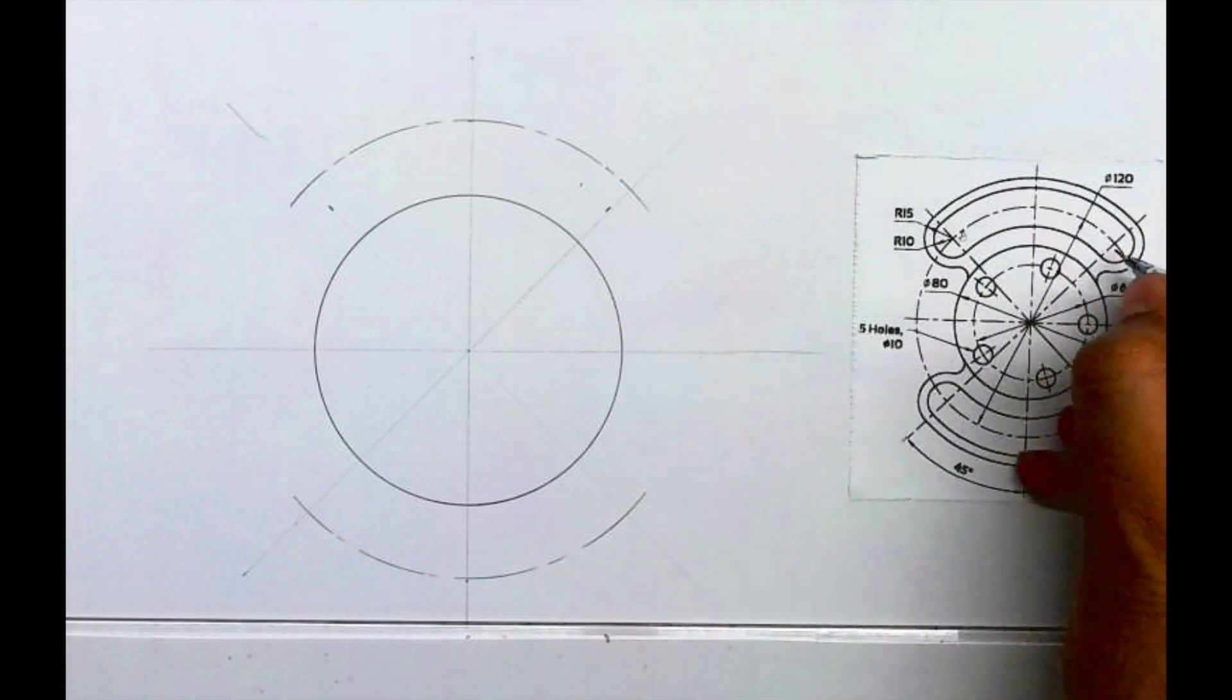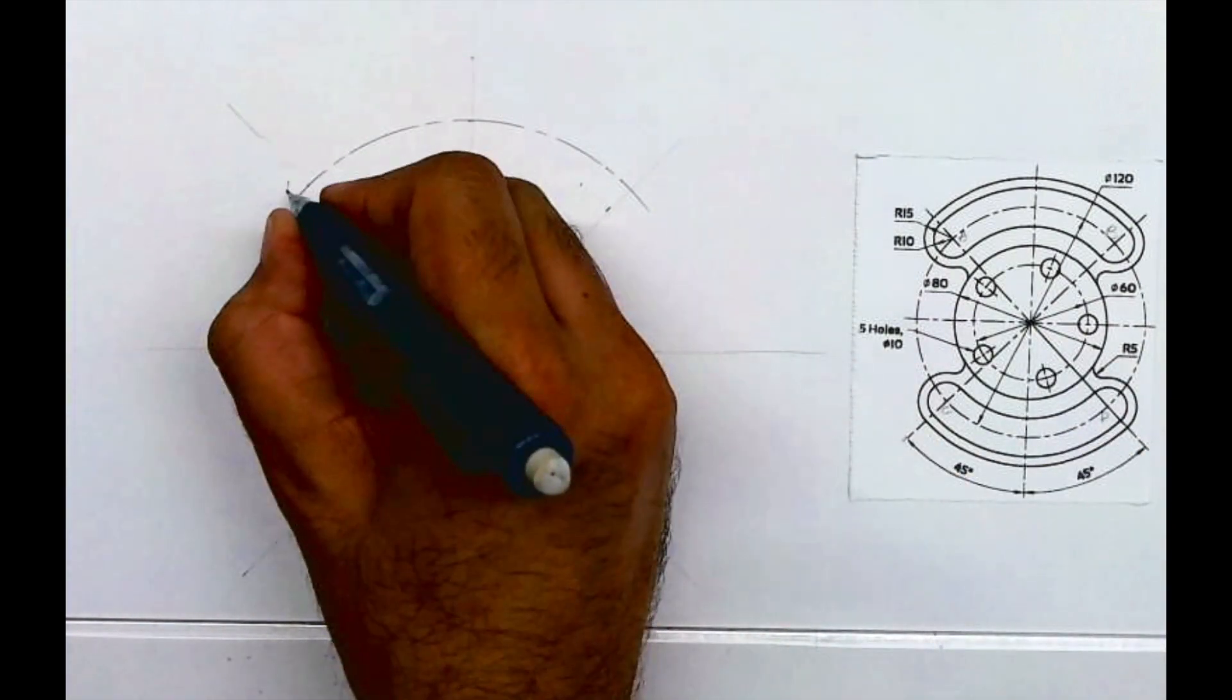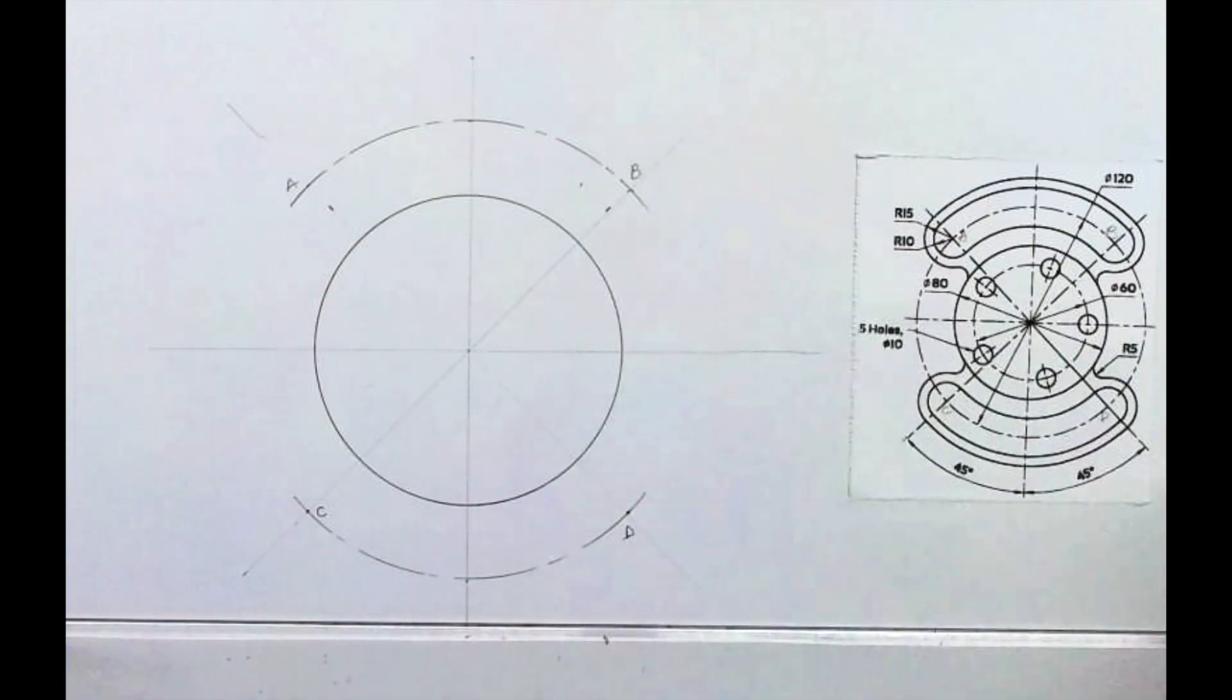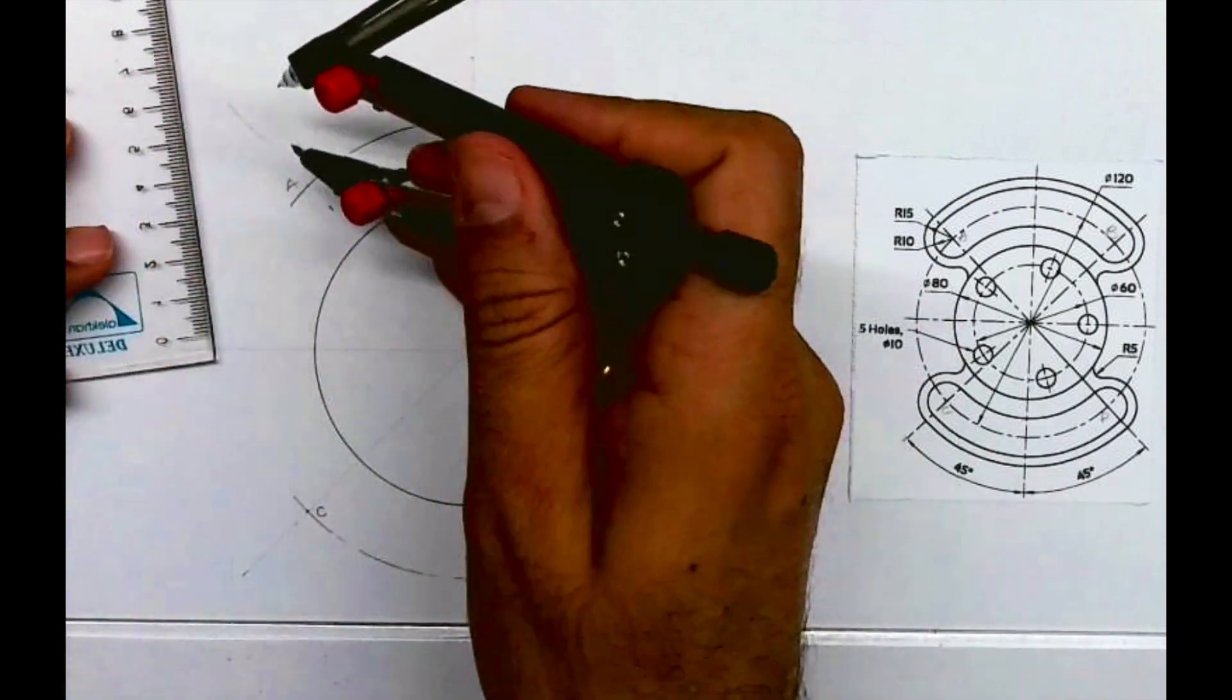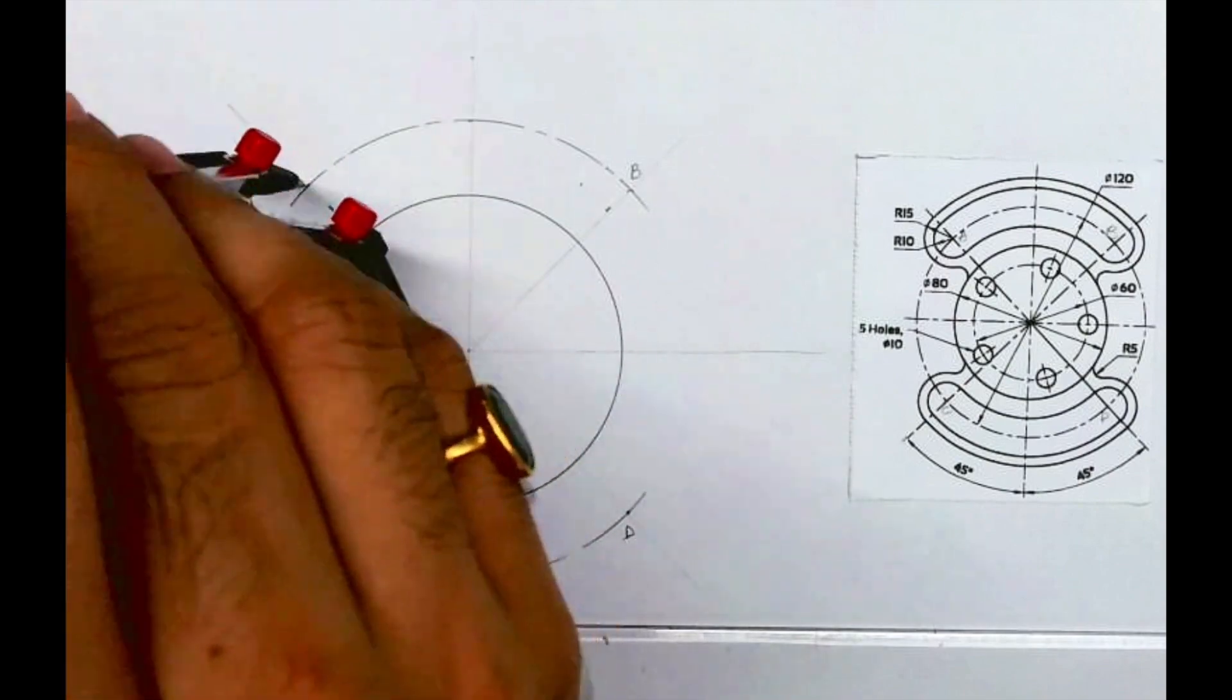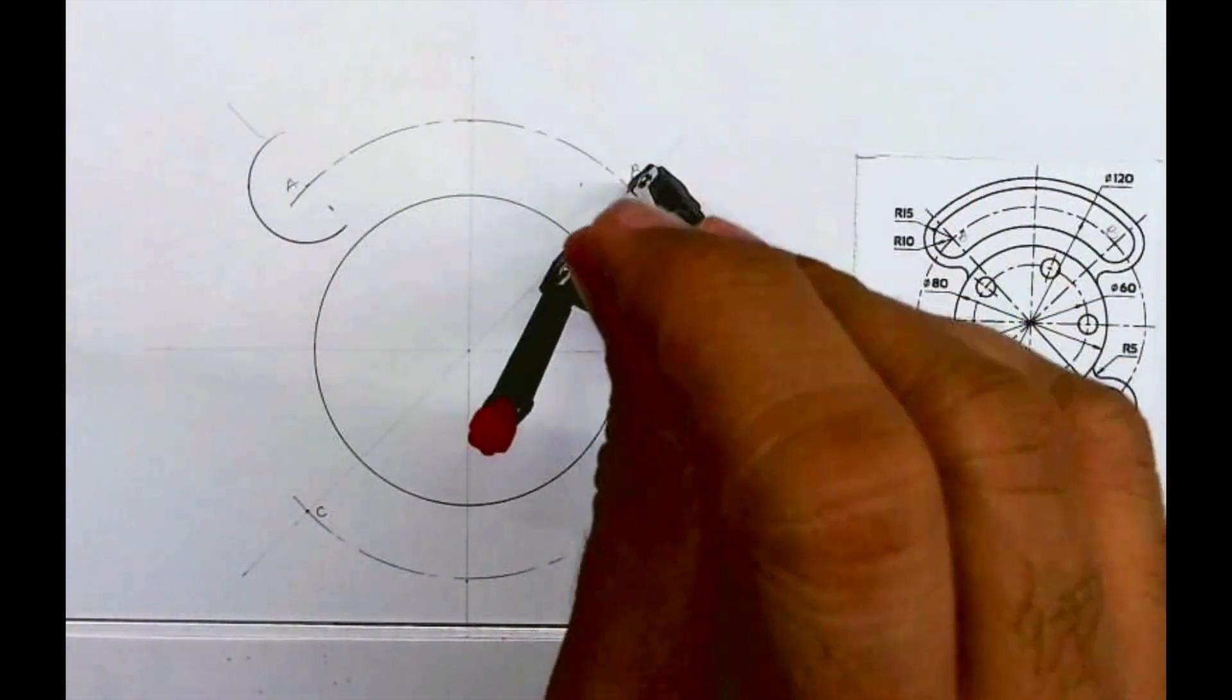This is point A, then B, then C and D. From A we will draw radius 15 and then radius 10. So first we will draw radius 15 from A. Then you can draw it from B and same from C and D.